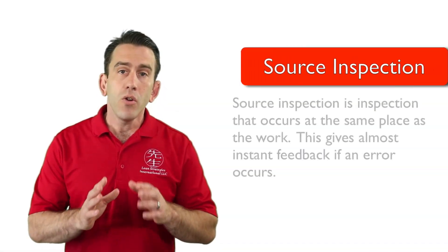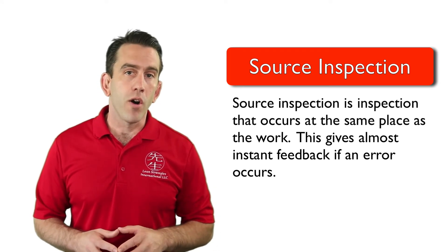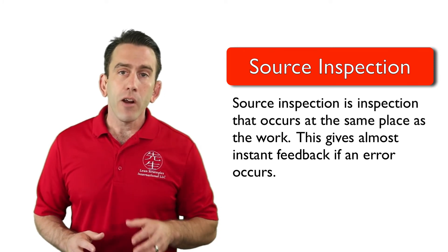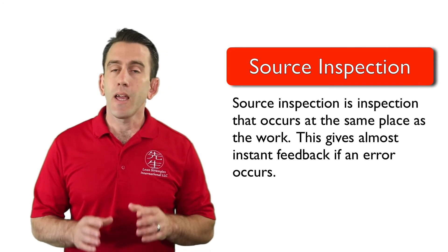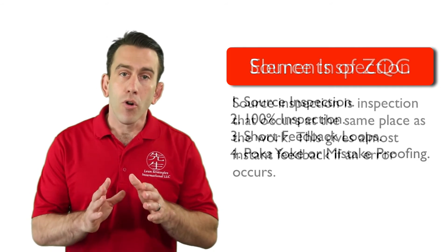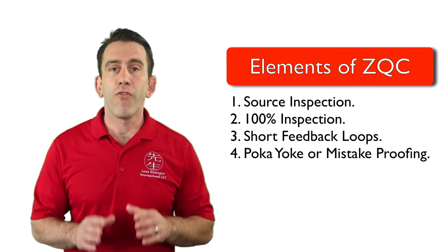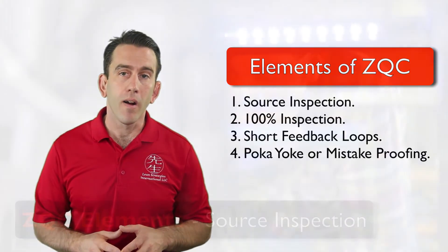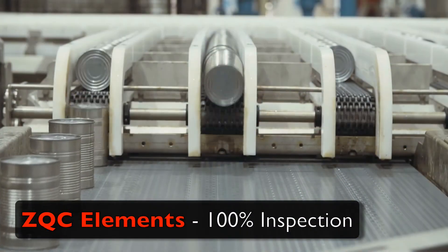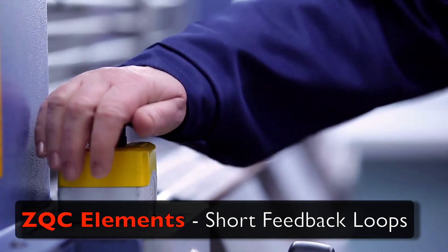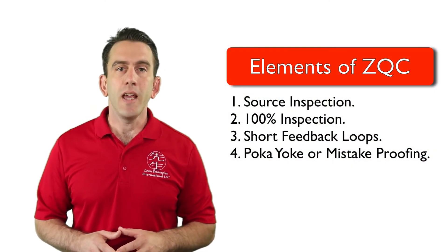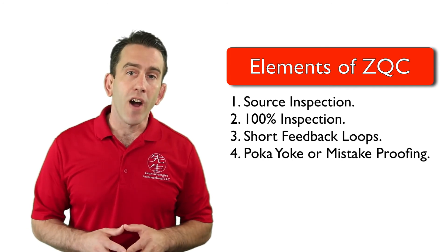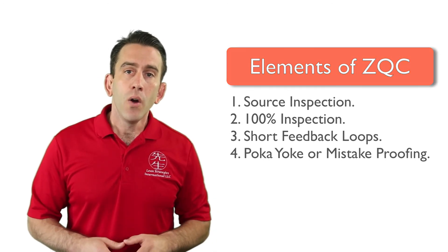This gives frontline employees who are doing the work an opportunity to detect and correct the error before their work is done. ZQC refers to this as source inspection — inspection that occurs at the source. When inspection occurs right at the source, the feedback is instant and any problem can be corrected before the defect occurs. The Zero Quality Control system works best with implementation of four foundational elements: source inspection, 100% inspection, short feedback loops, and poka-yoke or mistake-proofing. These four elements have been proven to effectively help move from a process of inspection to an environment of process control.